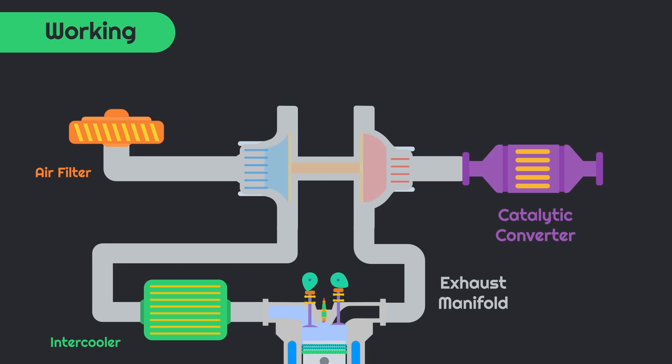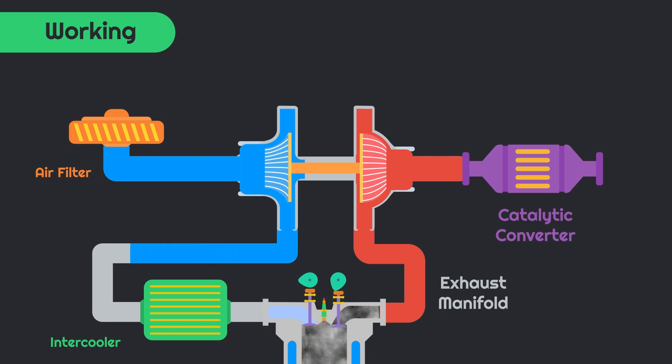Whenever the engine is in running condition, exhaust gas pressure drives the turbine blade inside the turbine chamber, which results in rotation of the compressor blade. The compressor chamber compresses the intake air and sends it to the engine cylinder, which results in more dense air intake of the engine. This allows the engine to burn fuel more efficiently due to more dense air and quality of air.